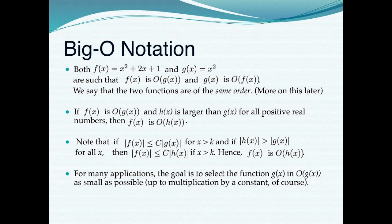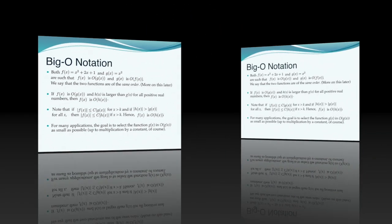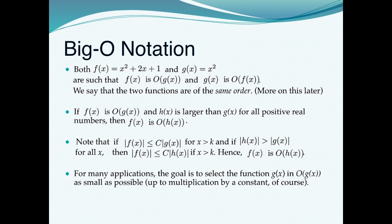These two functions are of the same order, meaning they behave in the same manner. As the input size grows very large, both functions will behave similarly towards infinity. Furthermore, if f(x) is O(g(x)) and there is a third function h(x) that is larger than g(x), then h(x) will also be a Big O bound for f(x).